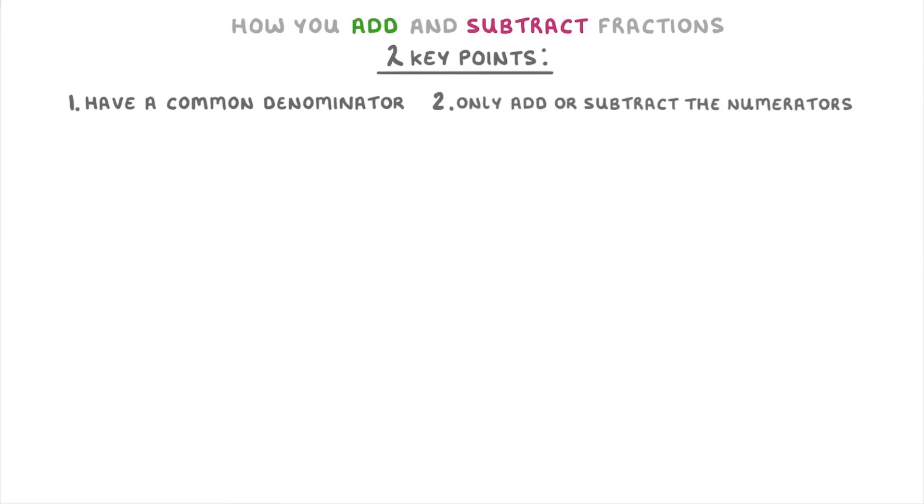In today's video we're going to look at how you add and subtract fractions, and there are really two key points you need to know. The first is that you have to have a common denominator, which means that the numbers on the bottom of your fractions need to be the same. And the second is that you only add or subtract the numerators, which are the numbers on top.